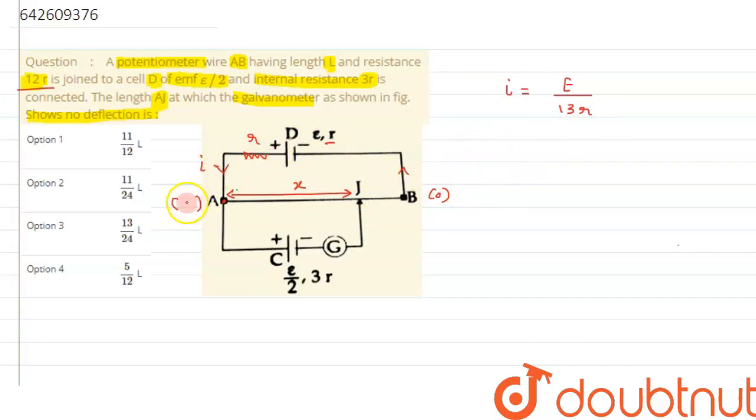Now we can calculate the potential at A because we know the resistance in the section AB is given as 2Lr. So we can write potential at point A, or we can simply say the potential across wire AB can be written as V equals I times R by Ohm's law. So epsilon by 13r is the current, and resistance is given as 2Lr. From here we can say the value of potential difference across AB or potentiometer wire is coming out to be 2L epsilon by 13r.